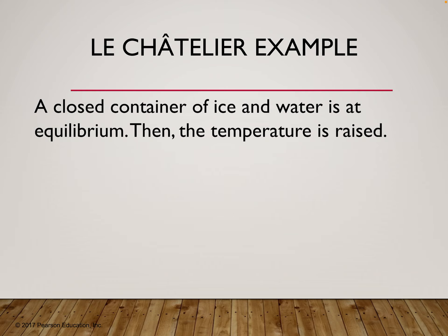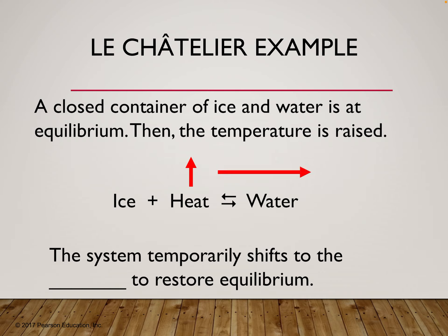Let's look at an example: a closed container of ice and water at equilibrium. Melting ice is an endothermic reaction, so heat goes on the side with the ice as a reactant. If I raise the temperature, I increase my heat, which means my reaction will shift to the right to use up that added heat — producing more water. Remember: we always shift away from whatever we add and toward whatever we remove.